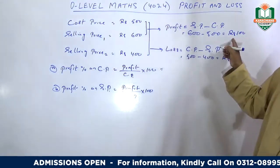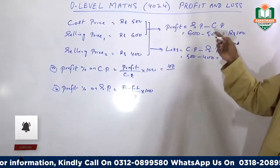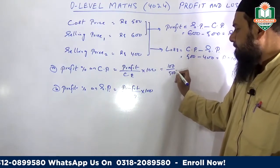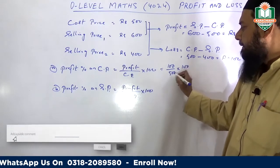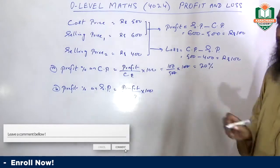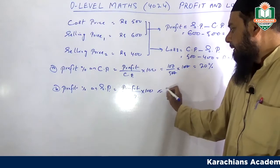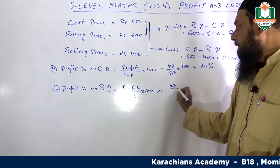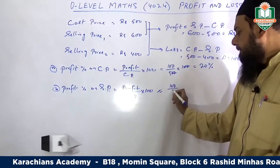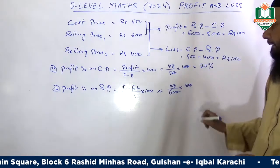The profit is 100, cost price is 500, so 100 over 500 multiplied by 100 gives 20% profit on cost price. Now for selling price: 100 over 600 multiplied by 100.